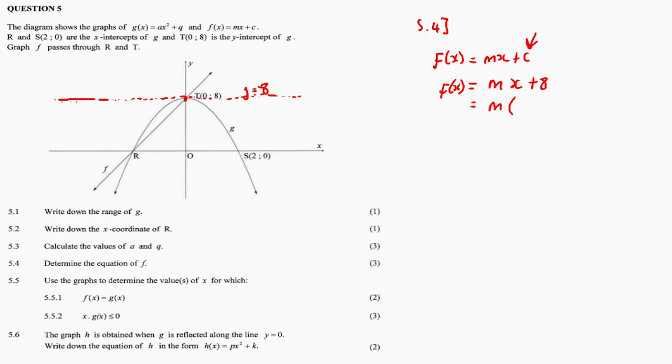I'll use point R, which is minus 2 and 0. Remember, in 5.2, the x-coordinate of R is minus 2. So the y-coordinate is 0, the x-coordinate is negative 2. Substituting: 0 = m(-2) + 8. So -8 = -2m. Divide both sides by negative 2 and we get m = 4. Therefore, the equation for f of x is equal to 4x + 8.